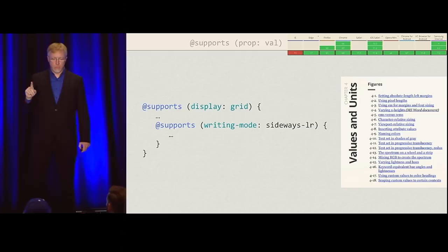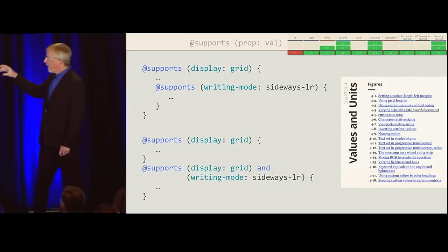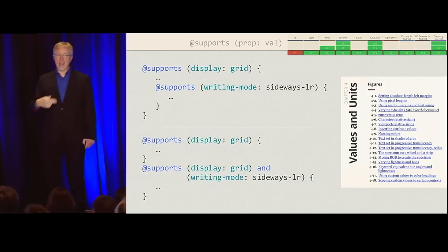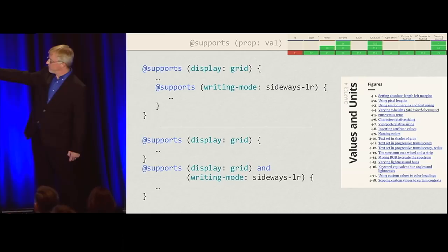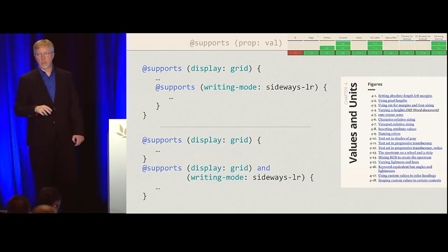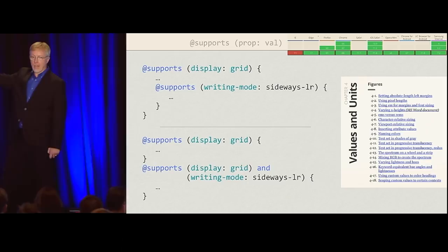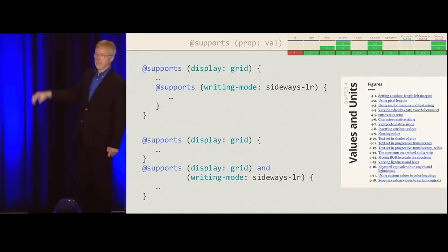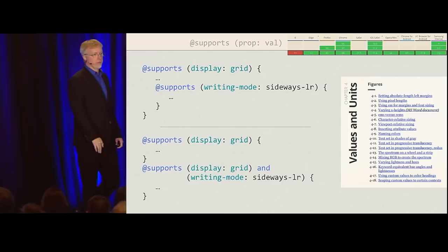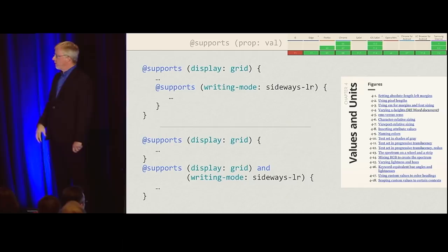You don't have to nest feature queries if you don't want to — there are two functionally equivalent approaches. You can have @supports (display: grid) with a nested @supports (writing-mode: sideways-lr) inside, or you can have two separate blocks using logical AND operators. These are functionally equivalent — it's really down to which makes more sense to you. I personally prefer nesting. If you're working in a team, pick an approach and stick with it.